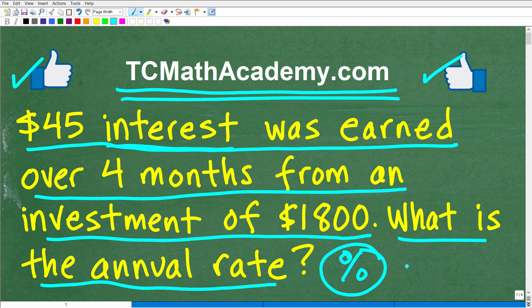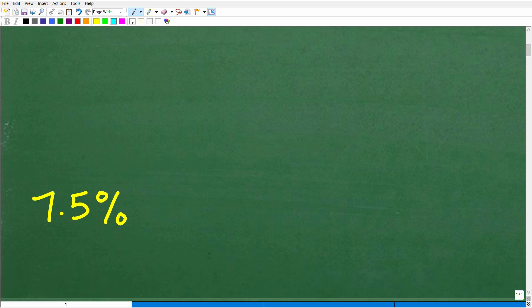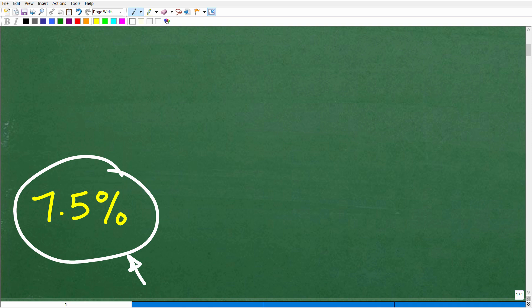Okay, so let's go and take a look at the answer. So again, we're looking for the annual rate, the annual interest rate that this particular financial institution is giving us on this investment. And the answer is the following: 7.5%, our annual rate.